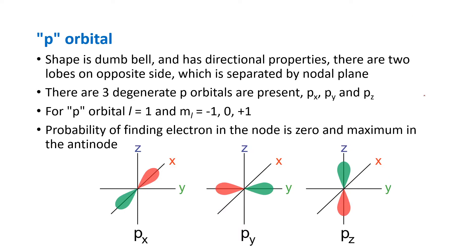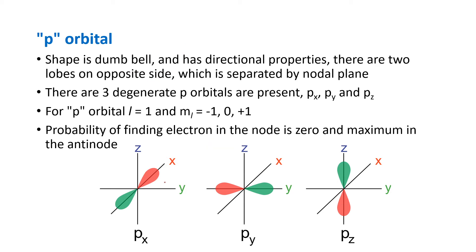The p orbital has a dumbbell shape, like a dumbbell you see in gyms. It has directional properties — it can be oriented in particular directions. There are two lobes on opposite sides, separated by a nodal plane. There are three degenerate p orbitals, meaning they have the same energy.